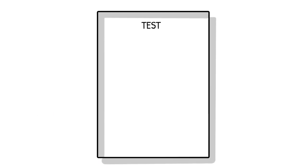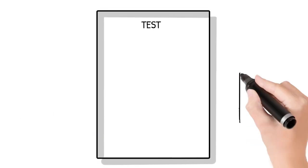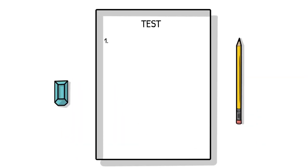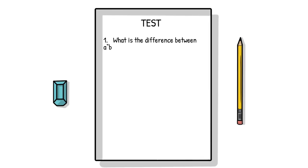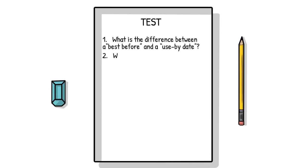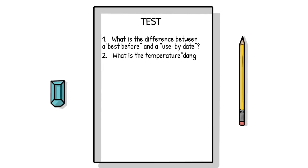Some of the questions that would need to be asked to address the knowledge component of PC 1.3 could include: 1. What is the difference between a best before and a use by date? 2. What is the temperature danger zone?